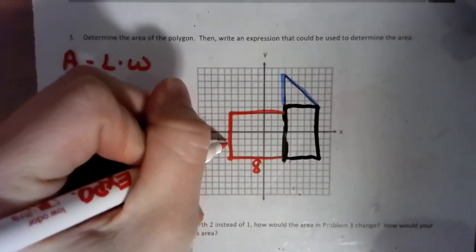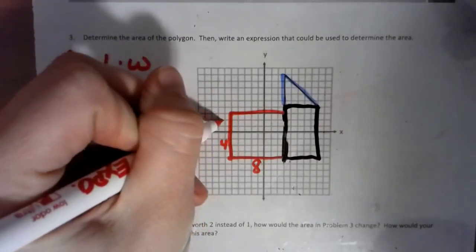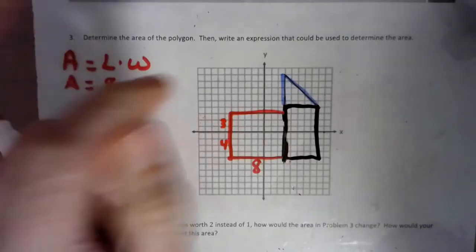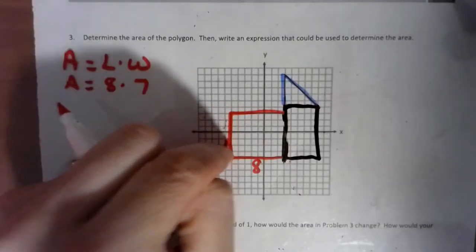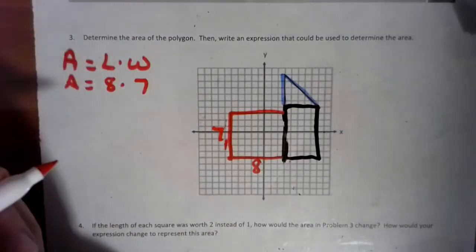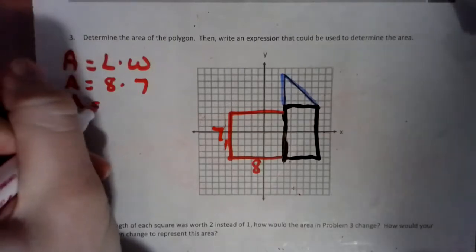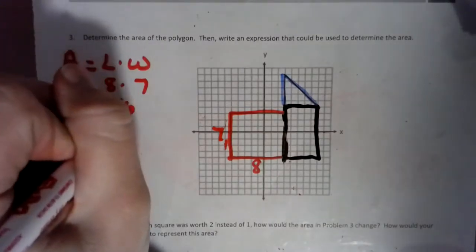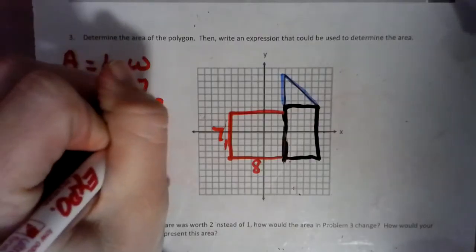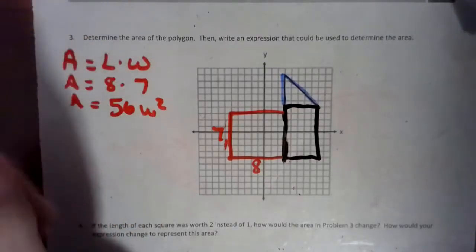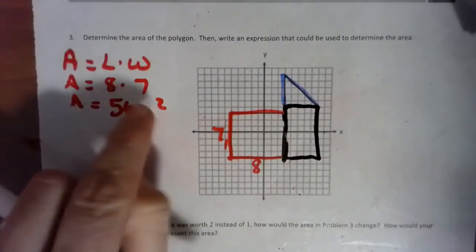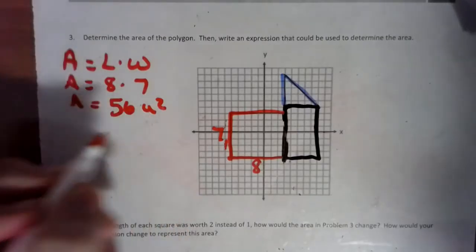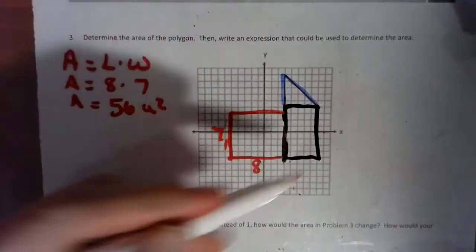And then our width is 1, 2, 3, 4 here, and 3 here together make 7. Just so you can see how that unfolded, that is a side of 7. So, area equals 8 times 7. 8 times 7 is 56, and unit squared. Let's make that look a little better for you guys.